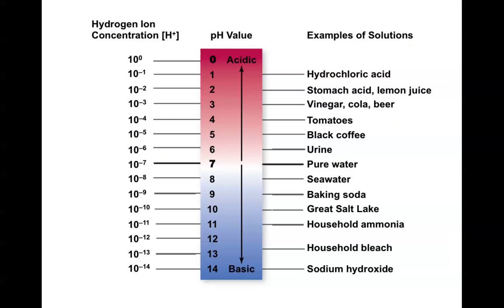A larger pH, like pH 9, means that there are 1 times 10 to the negative 9, or 1 in a billion hydrogen ions in the solution. A smaller pH, like pH 3, means that there are 1 times 10 to the negative 3, or 1 in a thousand hydrogen ions in the solution.